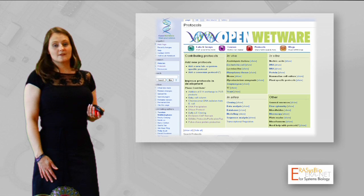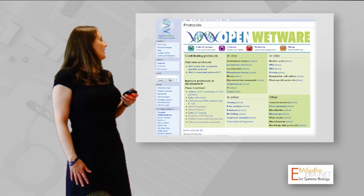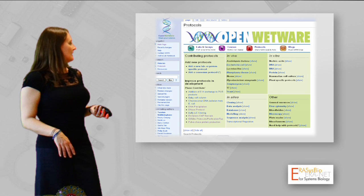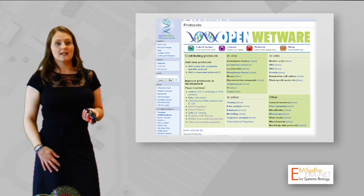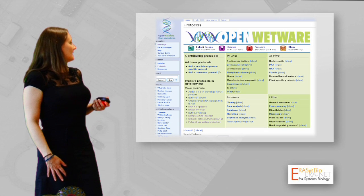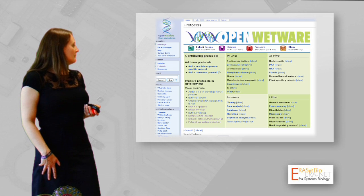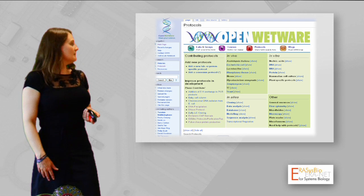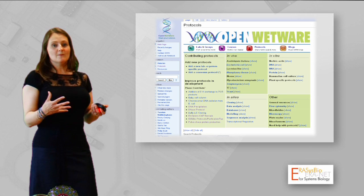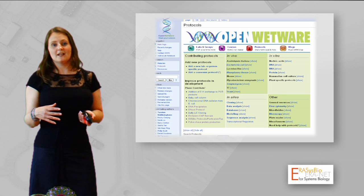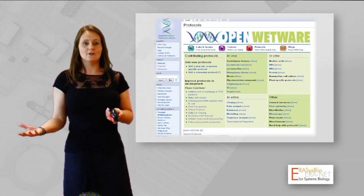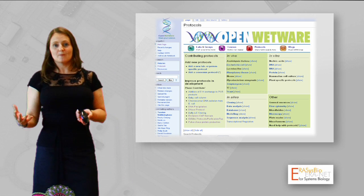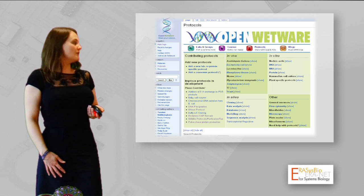This is a screenshot of Open Wetware. As you can see, it looks like any other kind of wiki — things are categorized, you can tag them, you can comment on things. This also means that members of the public can comment on your protocols and SOPs, which may help you improve them in the future.